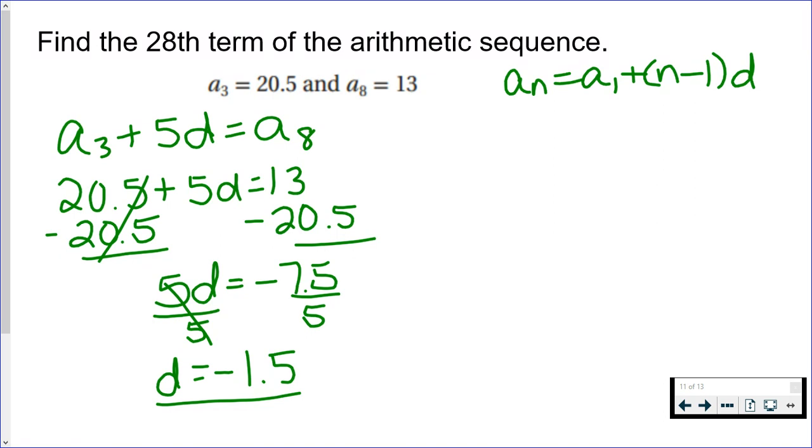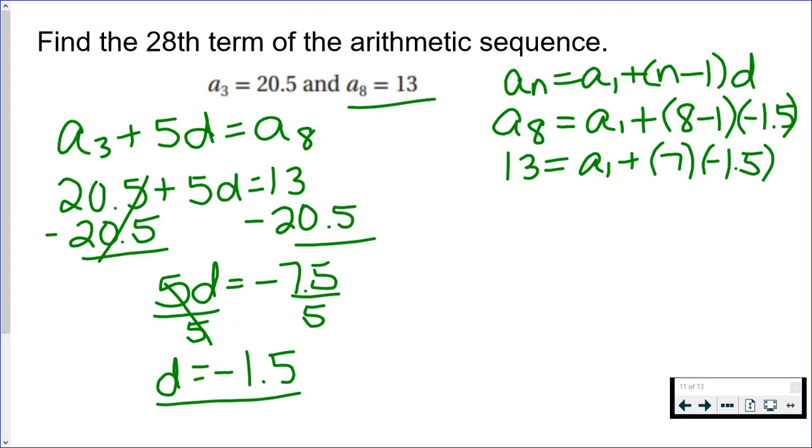Now in order to do this, I'm going to use either the third term or the eighth term. It doesn't matter which one you use. I like whole numbers better, so I'm going to use the eighth term. That means n is eight. We don't know the first term, and we know our common difference, we just found it. So now we're going to go ahead and simplify. The eighth term is 13. Multiply seven times negative 1.5, and then the last step will be to add 10.5.